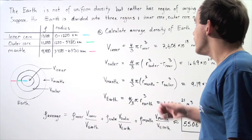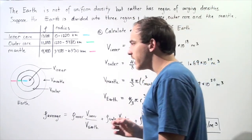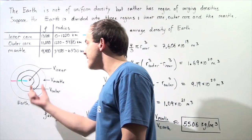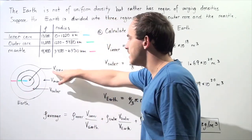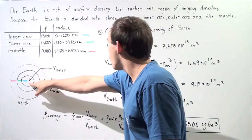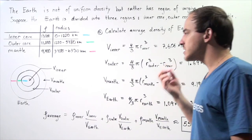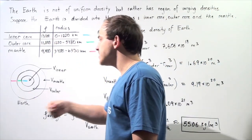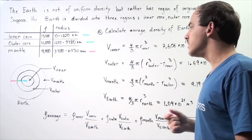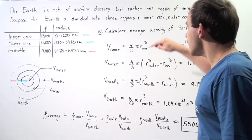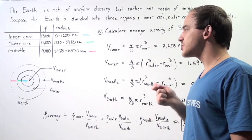In order to calculate the average density of the Earth, we first have to calculate how much volume each region takes up. Let's begin by calculating the volume of the inner core. To calculate the volume of the inner core, we make the assumption that our Earth is a perfect sphere, so we can use the formula for a sphere: the volume of a sphere is equal to four-thirds pi r cubed.